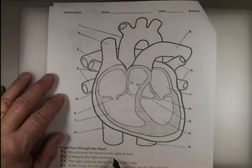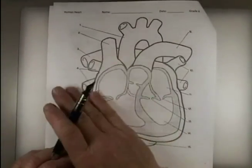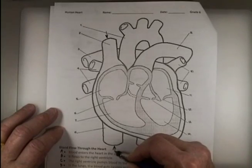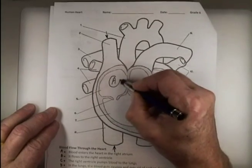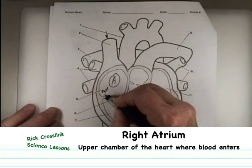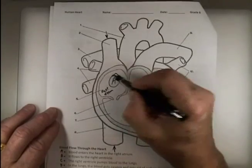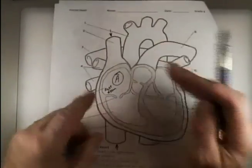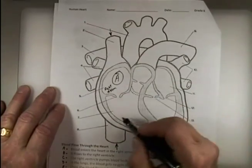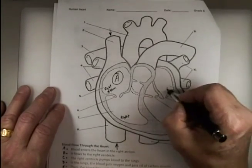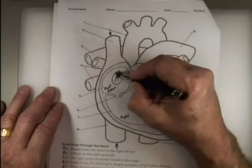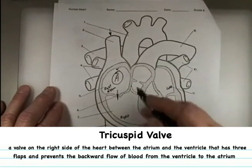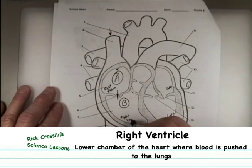A: blood enters the heart in the right atrium. The heart has a right side and a left side. Blood comes in from the back and through the top at A — write A right there — that is the right atrium. The word 'atrium' is like an atrium in your school, a window at the top, so blood comes in. Then blood goes down through the tricuspid valve to B.